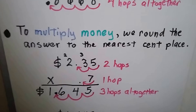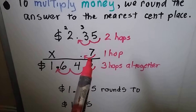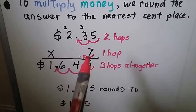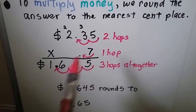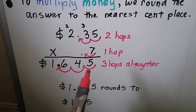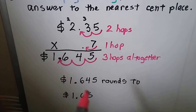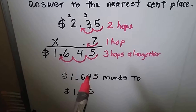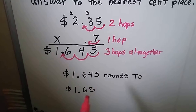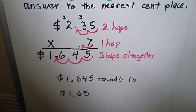To multiply money, we round the answer to the nearest cent place. So if we're multiplying an amount of money by a decimal — like maybe it's two dollars and thirty-five cents for every seven-tenths of a pound of apples — we can multiply and count the hops. When we put the three hops into the product, we know money only has two decimal places. So this five is going to tell the four to round up to a five, and instead of that we get a dollar sixty-five. So you can just round up or round down when it's money.